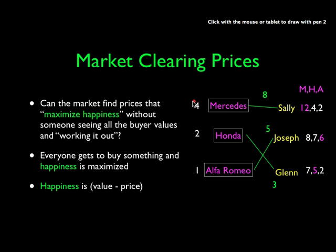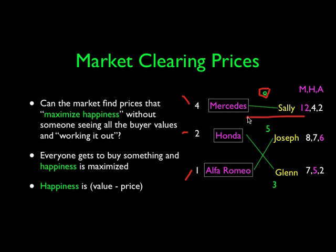Here's an example of some arbitrarily chosen market clearing prices: let's make the Mercedes $4, the Honda $2, and the Alfa Romeo $1. At this point, Sally gets the Mercedes and she's happy by 8 because it was worth 12 to her — happiness is the difference between what it's worth and what they pay. Joseph ends up with the Alfa Romeo; it's worth 6 to him and he pays 1, so Joseph's happiness is 5. Glenn ends up buying the Honda for 2, it's worth 5, so his happiness is 3.